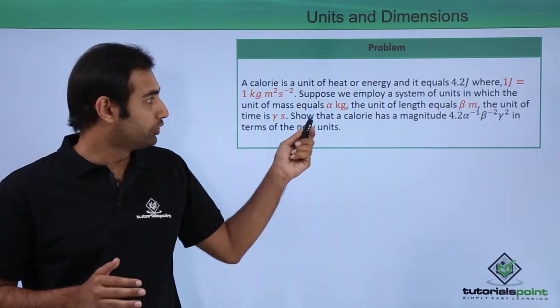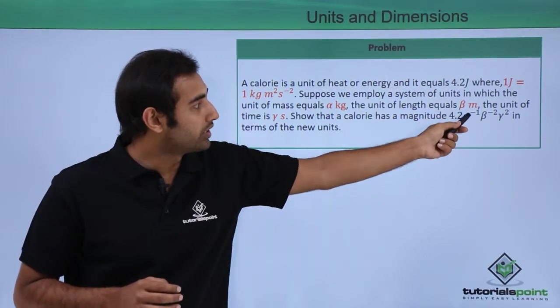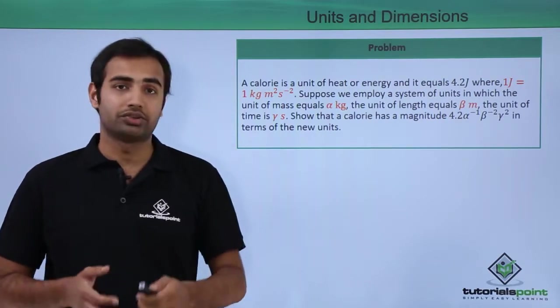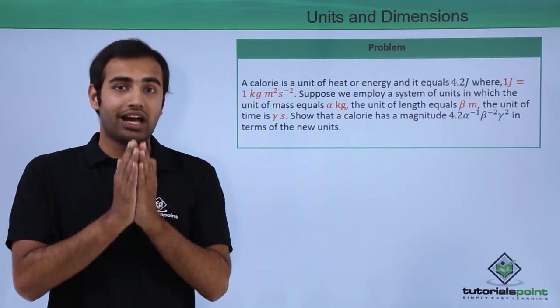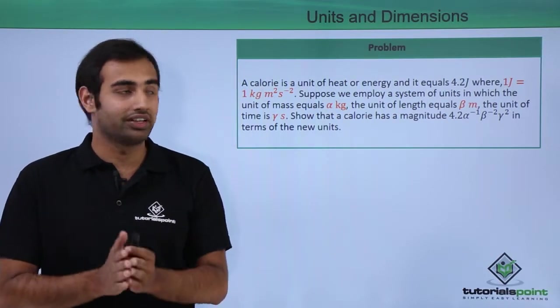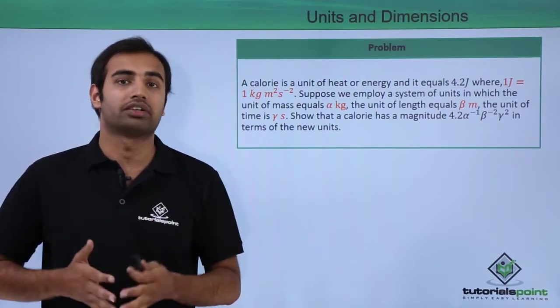we have to show that a calorie has a magnitude of 4.2 alpha raised to power minus 1, beta raised to power minus 2, gamma raised to power 2 in terms of the new units. So we have to show that the calorie now essentially is defined in this form in terms of the new units, the new fundamentals that I've assumed.